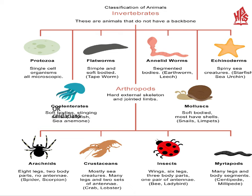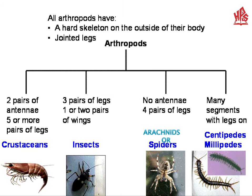You can observe this in the chart shown. Arthropods are animals which have a hard skeleton outside their body and joined legs. There are some arthropods: number one crustaceans, number two insects, number three arachnids or spiders, and number four centipedes and millipedes. You can also learn their characteristics by following this chart.